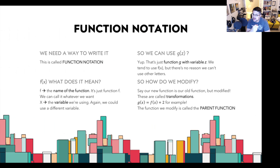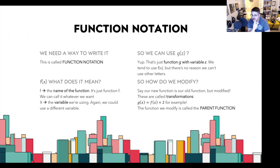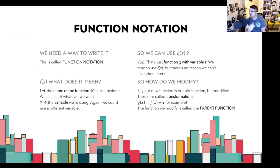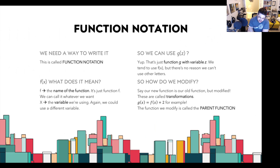How we write these transformations is through something called function notation. We've been writing functions like f of x, which means function f uses variable x, and x is what we're plugging into it. We could use any letter on the outside — g, h, k — and plug in any variable. Those letters in front are just ways of identifying which function we're referring to.